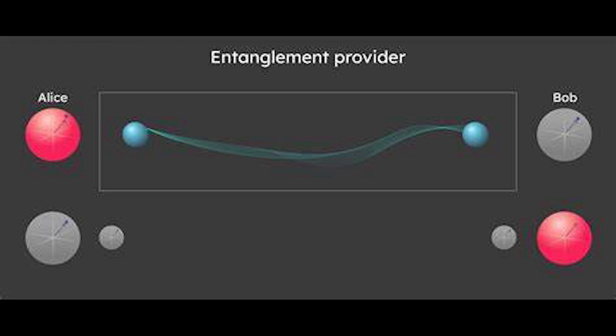This strange and non-intuitive connection is at the heart of quantum teleportation. Here's how quantum teleportation works in principle. Suppose we have two entangled particles, A and B. Particle A is with a sender, Alice, and particle B is with a receiver, Bob.